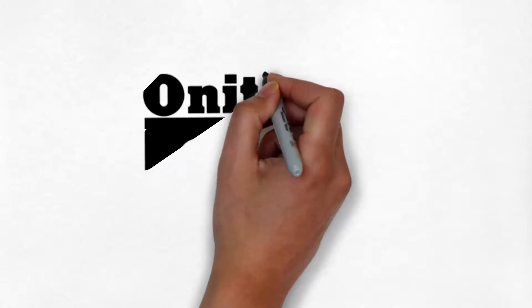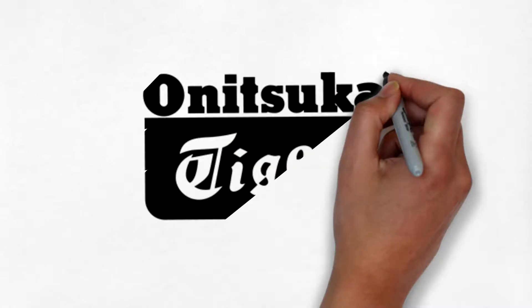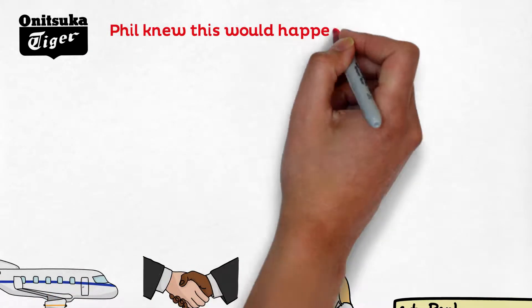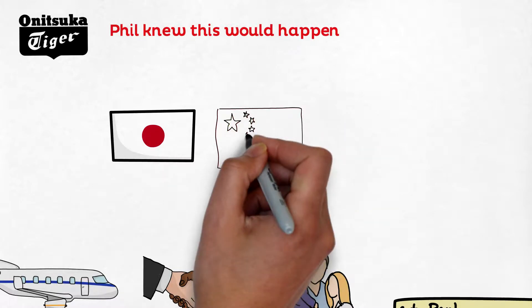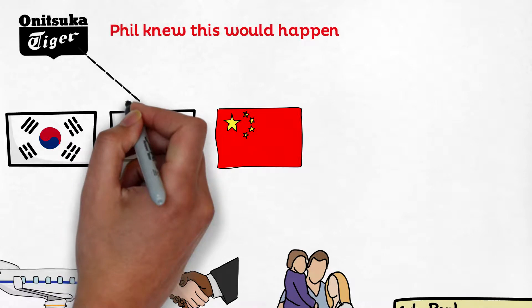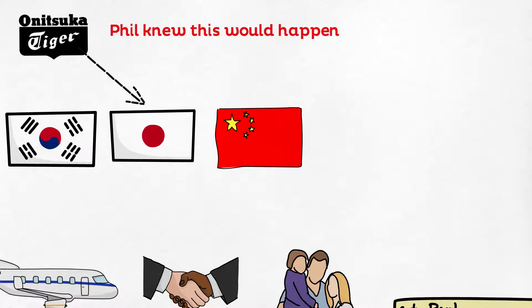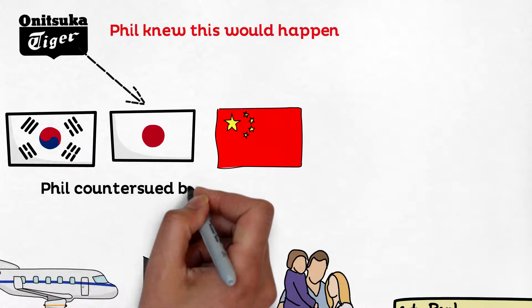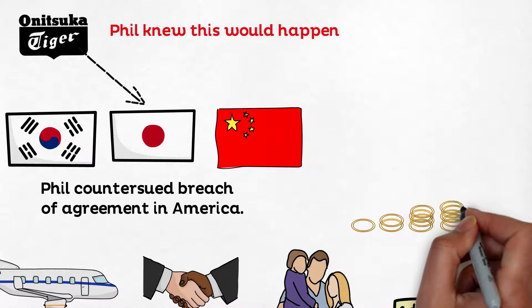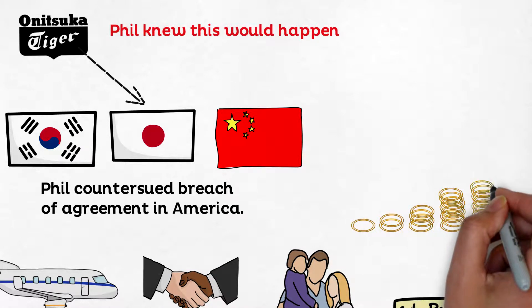Suddenly, due to the change in management, Onitsuka wanted to get rid of Phil's company and start selling Tigers directly in Japan. Phil saw this coming and already had started to look for alternate suppliers in Japan, China, Korea, and Mexico. Onitsuka found out about this and decided to sue Phil in Japan. Phil counter-sued for breach of agreement in America. While this trouble was mounting up, Phil needed to find an alternate plan to save the bank loan interest.